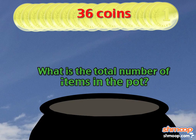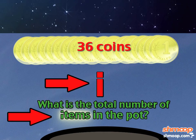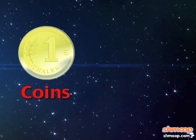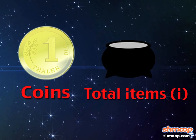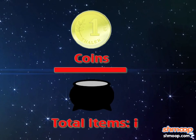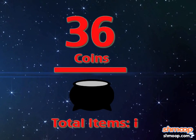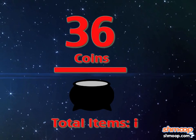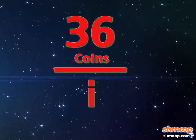We want to find the total number of items, so let's call our variable i. Now let's set up our ratios as coins to total items — we can also write that as a fraction. The number of coins is 36, so coins over total items is the same as 36 over i.